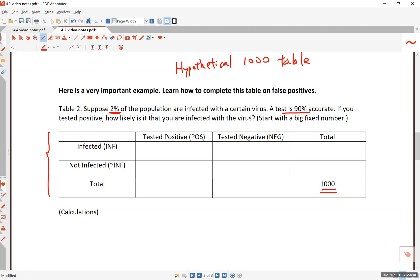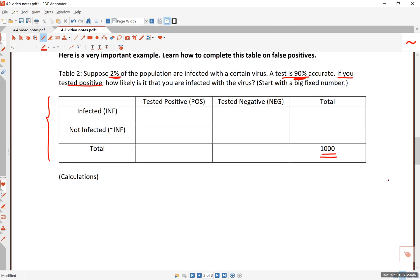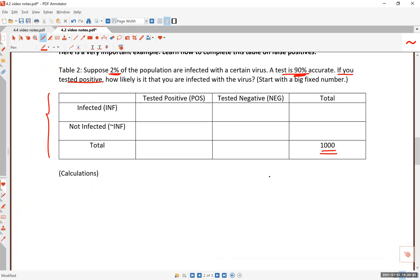The test is 90% accurate, which means 10% of the results will be the opposite. If somebody is infected, 10% of results will say they are negative, and vice versa. The question is: if you tested positive, how likely is it that you are infected? Is that 90% accurate? The answer is surprising, and that's one of the reasons I'm presenting this as an important question you'll need to be able to do for homework and on your exam.